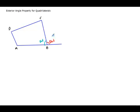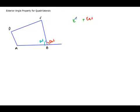Now you know that this exterior angle is supplementary to the interior angle, because this is a straight line. The sum of the interior angle plus the exterior angle is equal to 180 degrees, because, I repeat, it is a supplementary angle to the interior one.